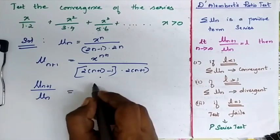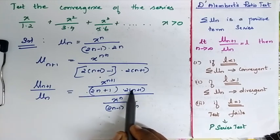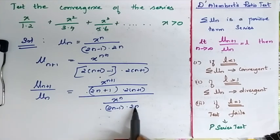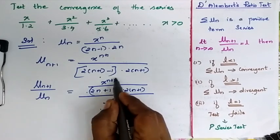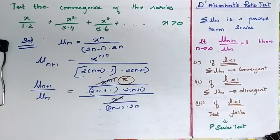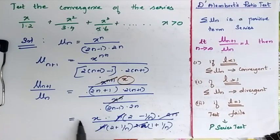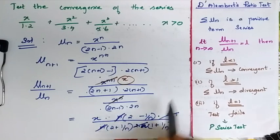I take n commonly outside from each factor. When I cancel these terms I will get x. So this simplifies to an expression whose limit I now need to evaluate.